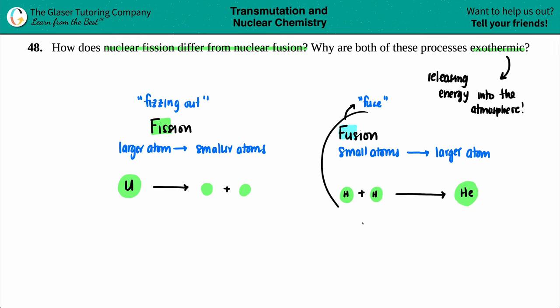On the flip side, fusion is also releasing energy into the atmosphere. A lot of fusion gets its energy from the sun and produces a lot of energy that gets released. These are both exothermic reactions. But now the question is why are they both exothermic? You would think that since they are opposites of each other, one would be exothermic and the other one's got to be endothermic.